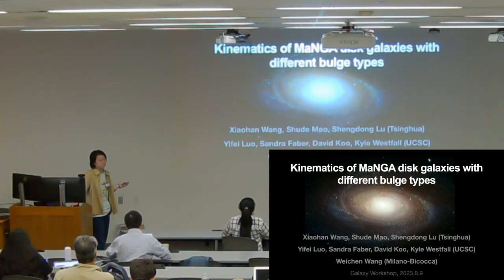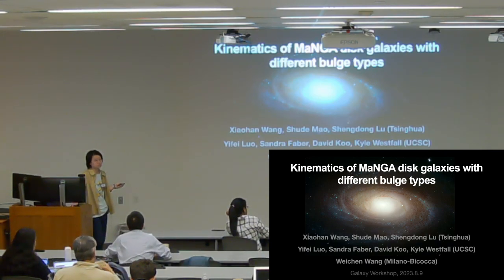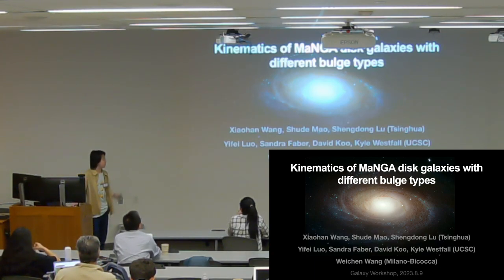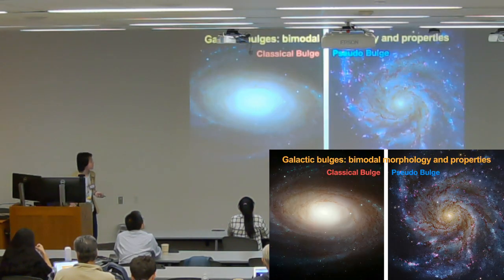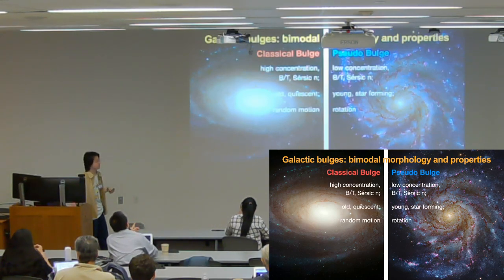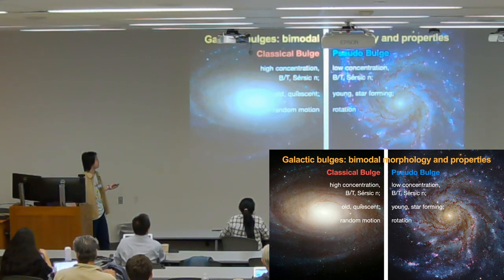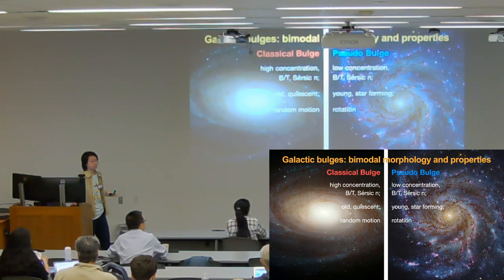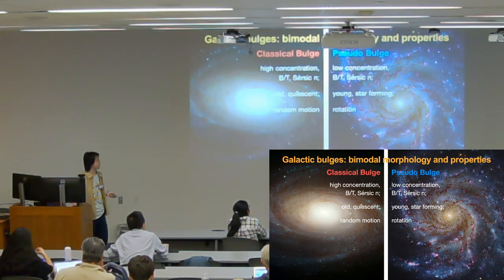The galaxy right here is M81. You can see its beautiful disk structure and the typical bright spirals in the center, so it's a typical disk galaxy with a classical bulge. But the galaxy bulge is not always spherical — it is actually bimodal in multiple properties and can be roughly classified into classical bulge and pseudobulge. Classical bulge and pseudobulge are different in structure, stellar population, and kinematics, and people traditionally assume that they are formed by different mechanisms and involve parallel paths.